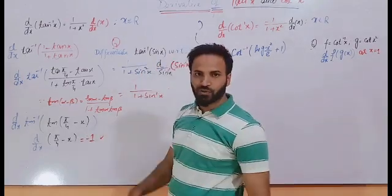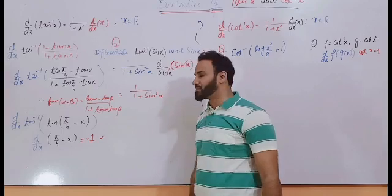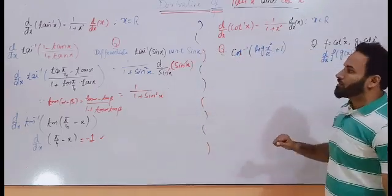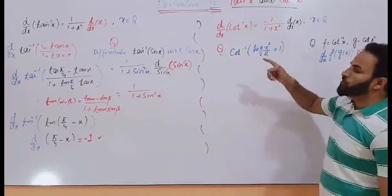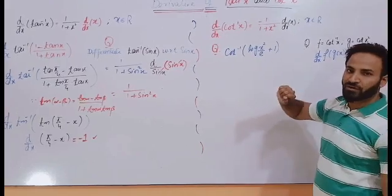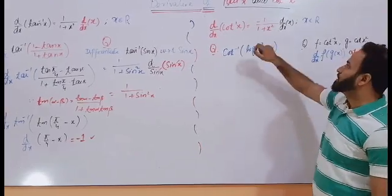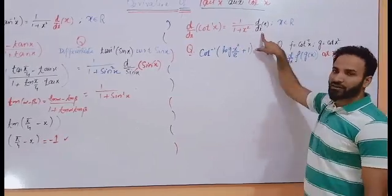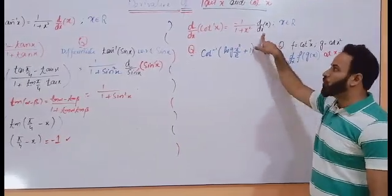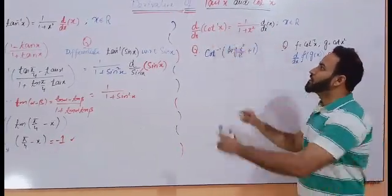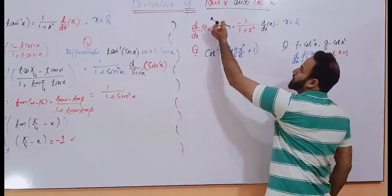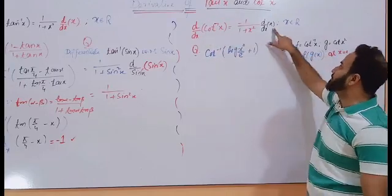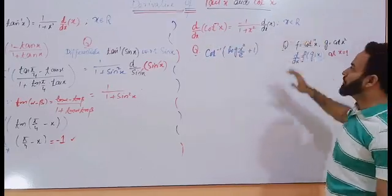This is a very important question which has appeared in different exams. Now we are going to move on to how you can take the derivative of cot inverse x. The definition is minus 1 over 1 plus x squared, and take the derivative of what is inside the cot inverse — that is x, and x belongs to the real line.